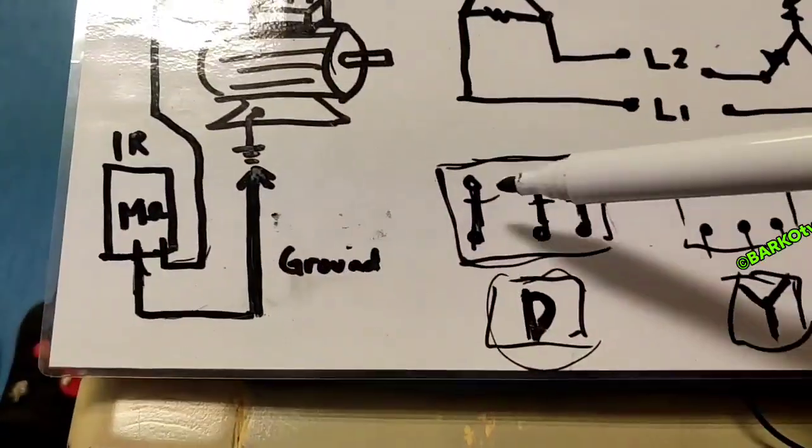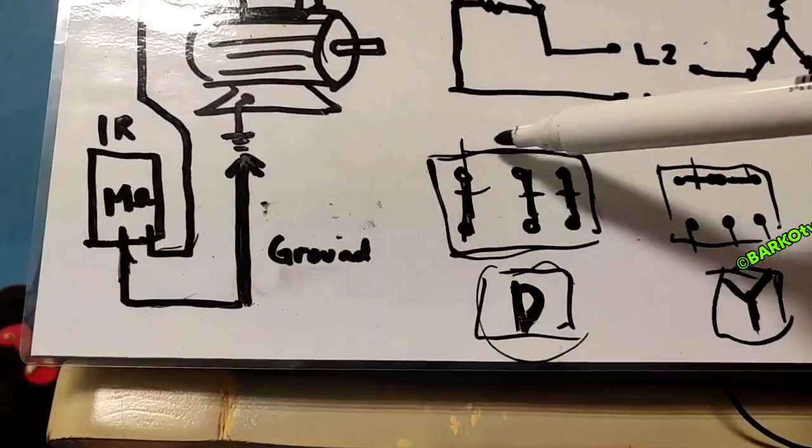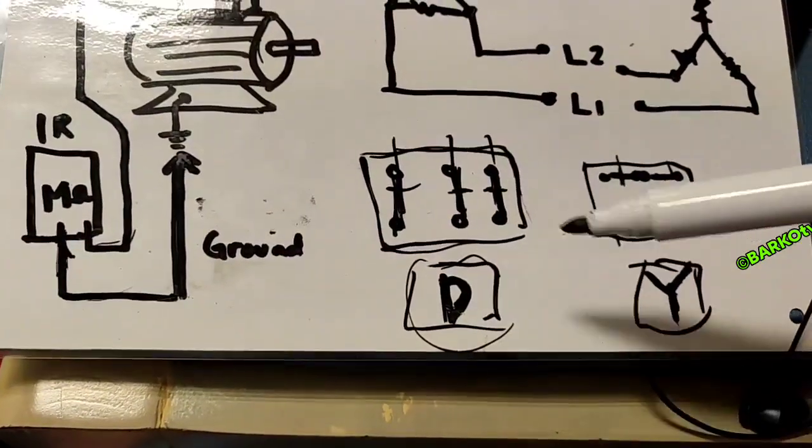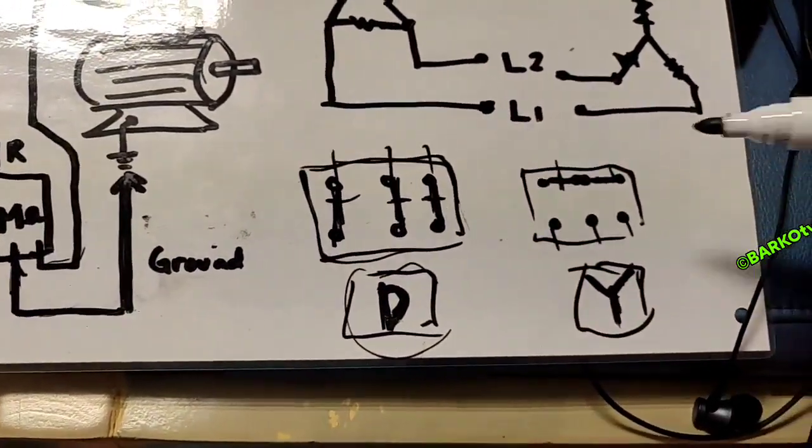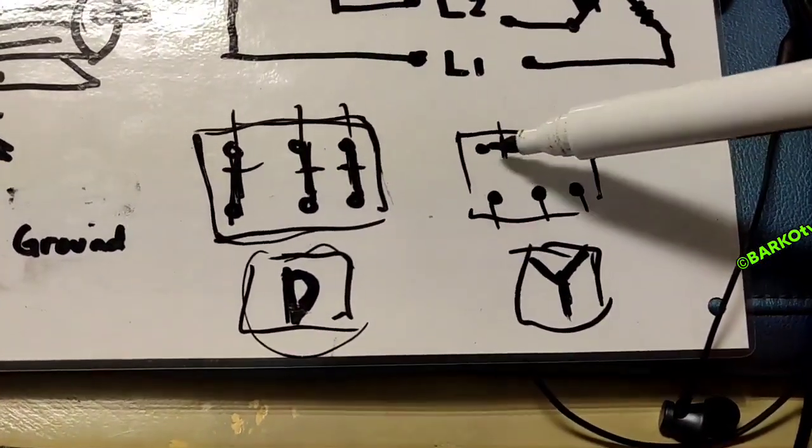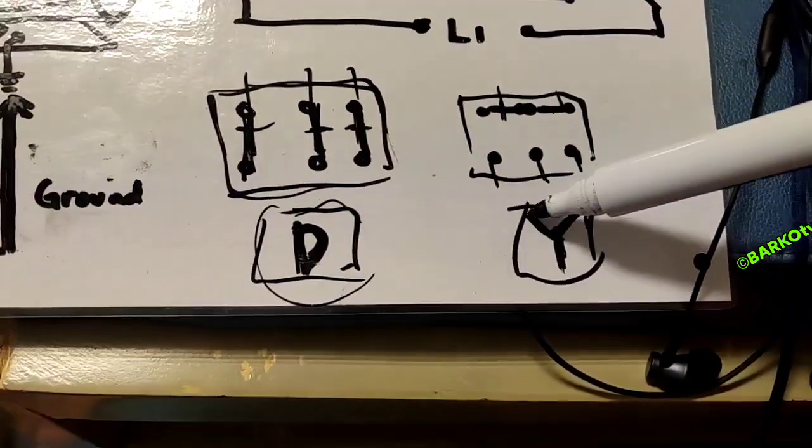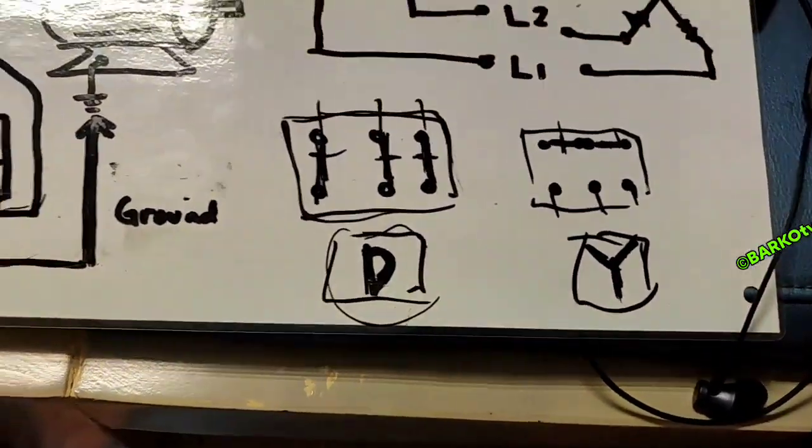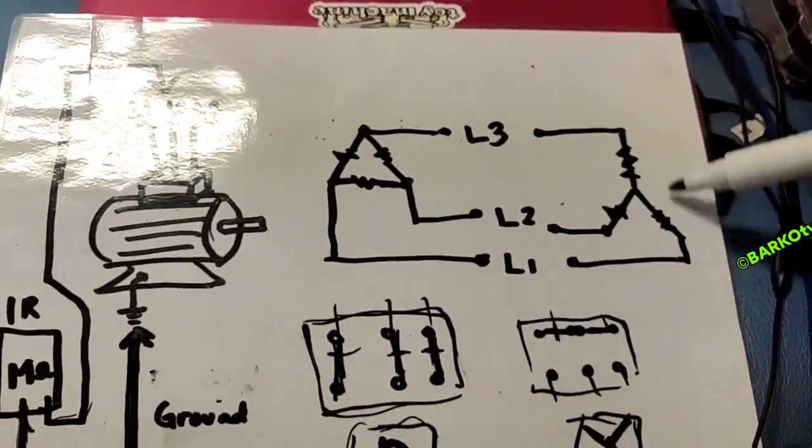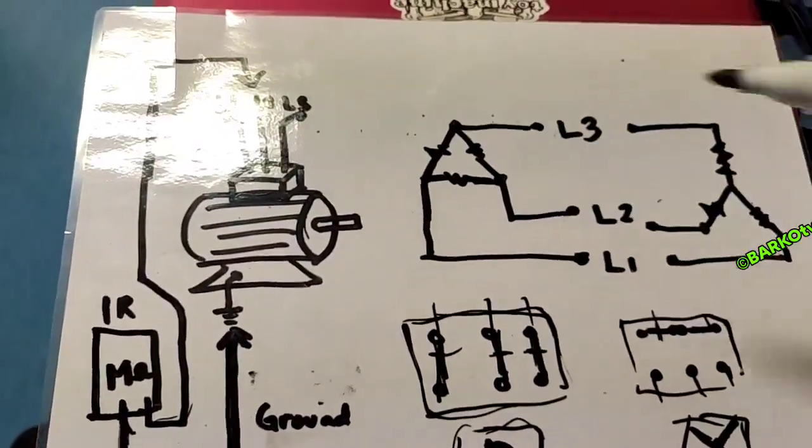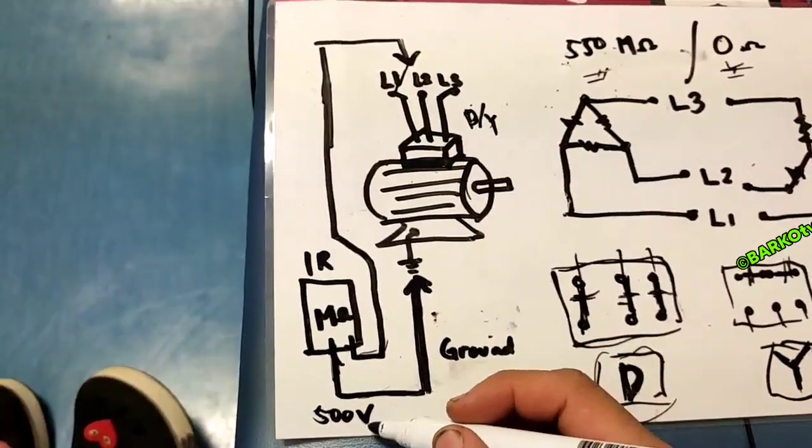It's like this: line one, line two, line three - that is Delta. The other connection is the Y. This one, this is the bridge, then line one, line two, line three. That is for the Y or the star. This is the connection for the Y and this is for the Delta.